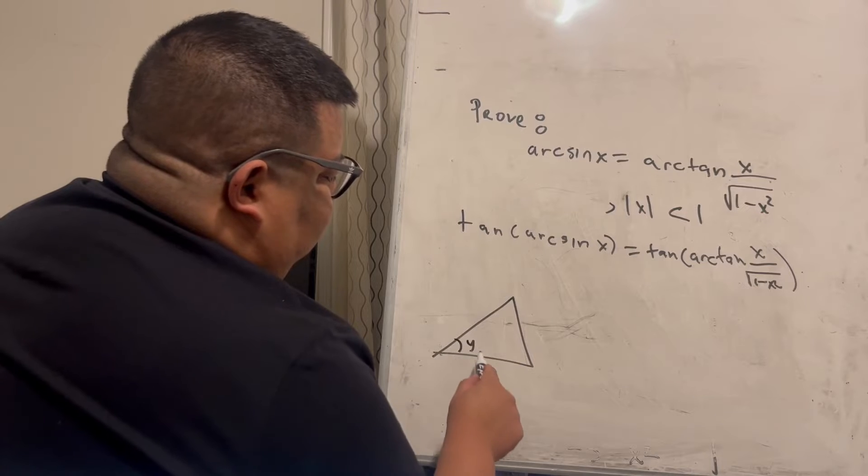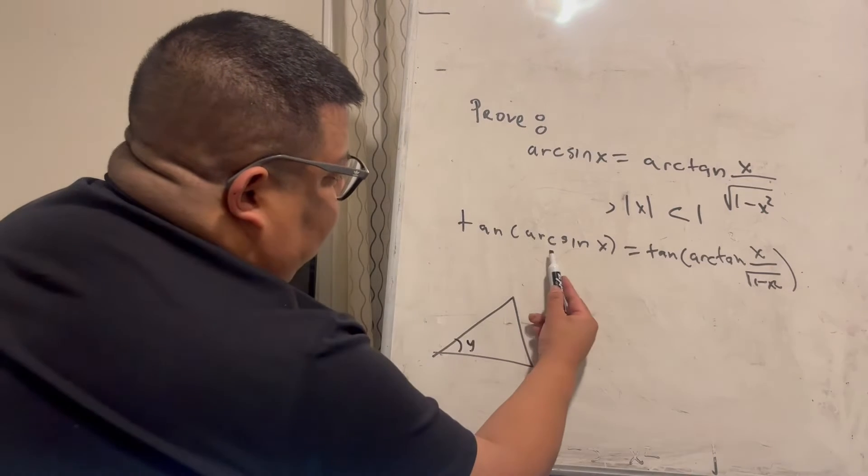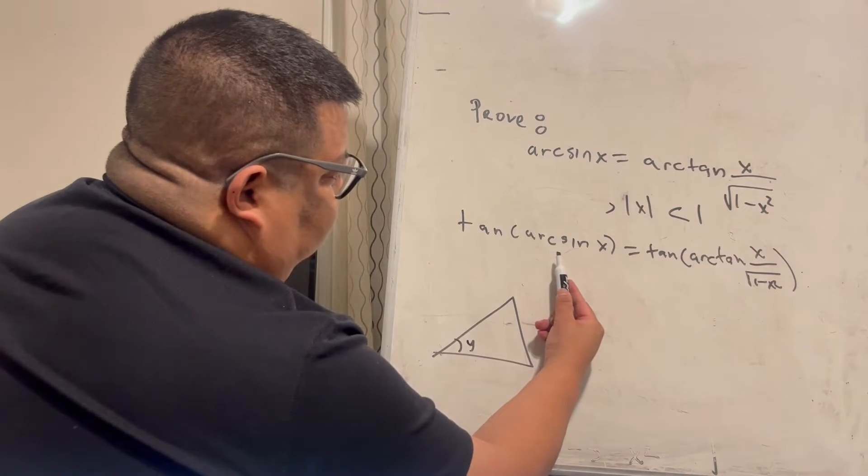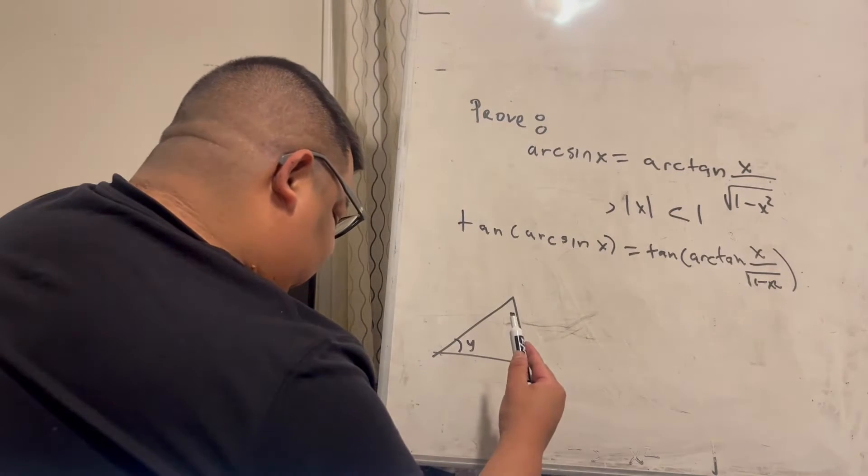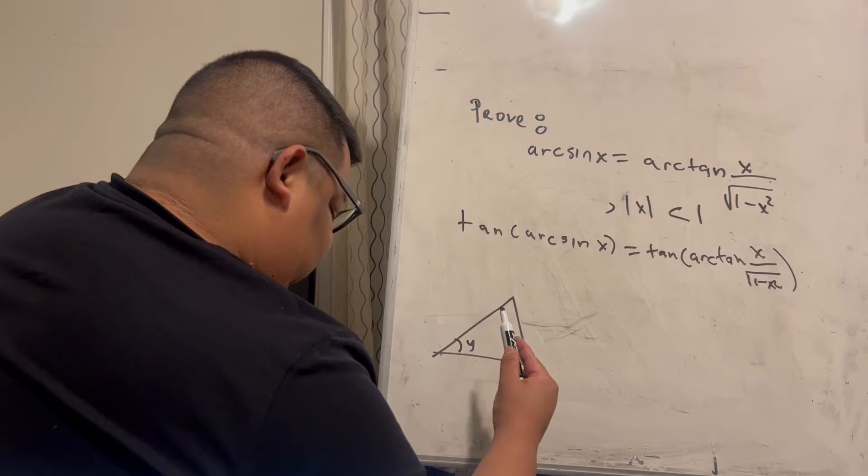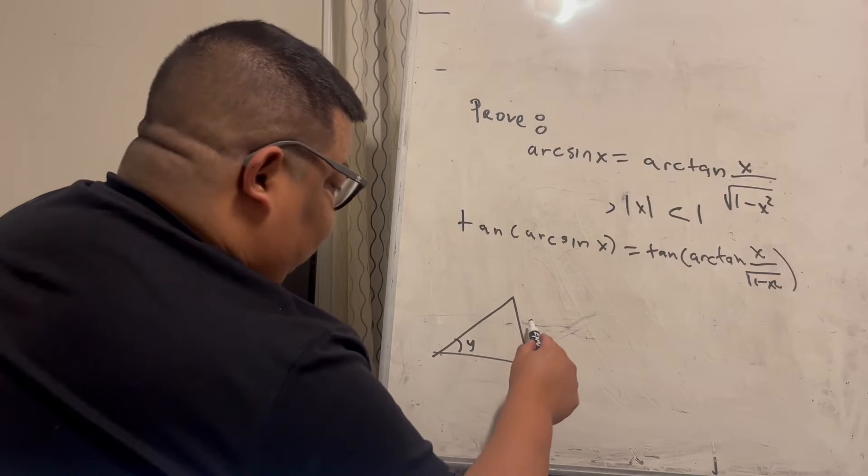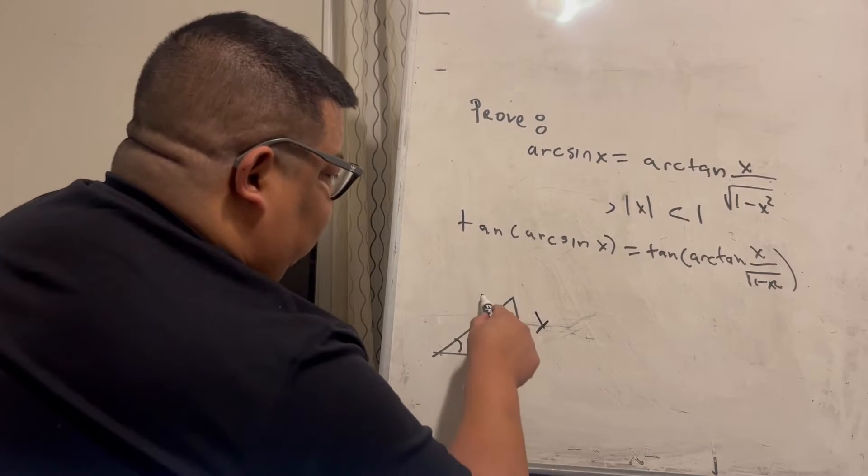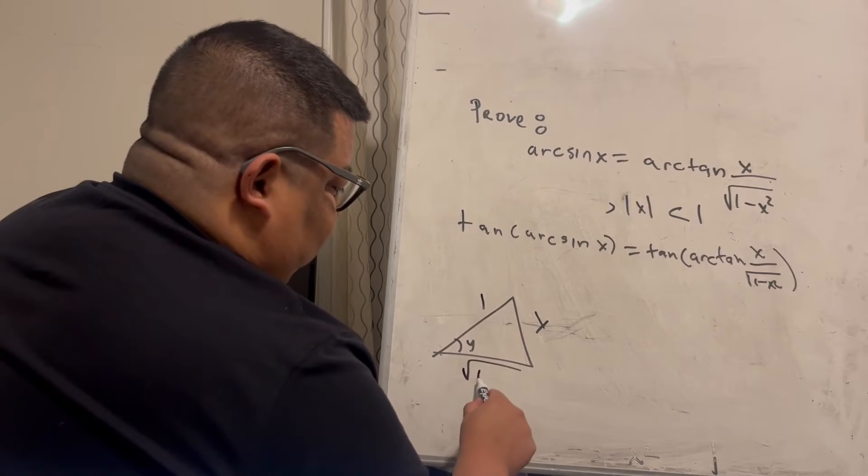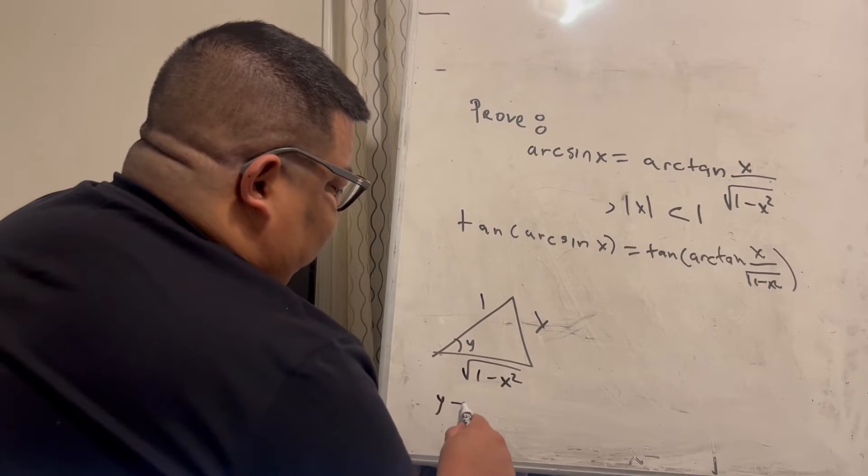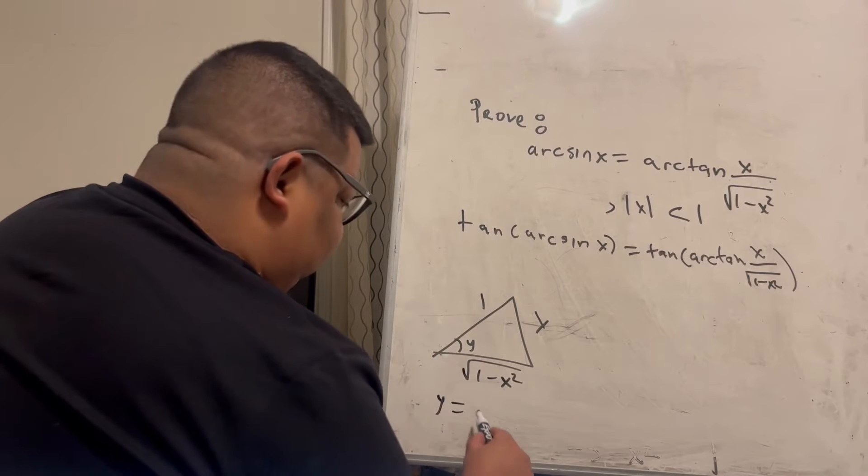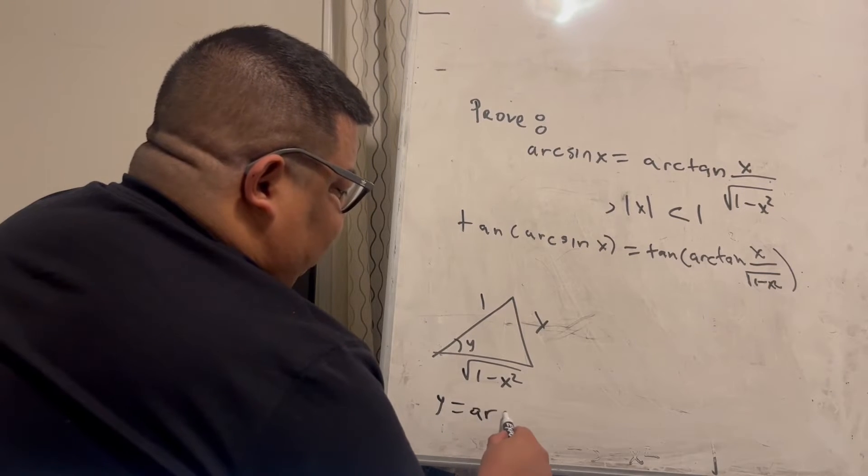So let's say that this is y. Then we have x, square root of 1 minus x squared, whenever y is equal to arcsin.